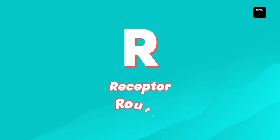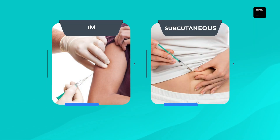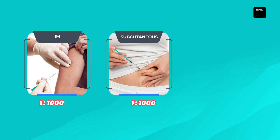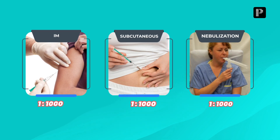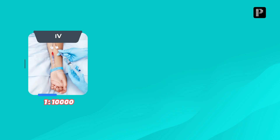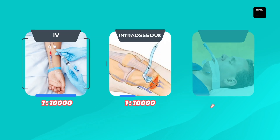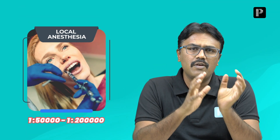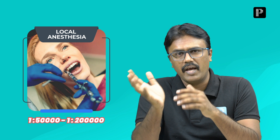One more important thing in R is routes. How do we give Adrenaline? It can be given IM or subcutaneous at a dilution of 1 in 1000. We can give it by nebulization, also at 1 in 1000. A 1 in 10,000 dilution is used when giving IV, intraosseous, or endotracheal. Along with local anesthesia, we use a dilution of 1 in 50,000 to 1 in 2 lakh.